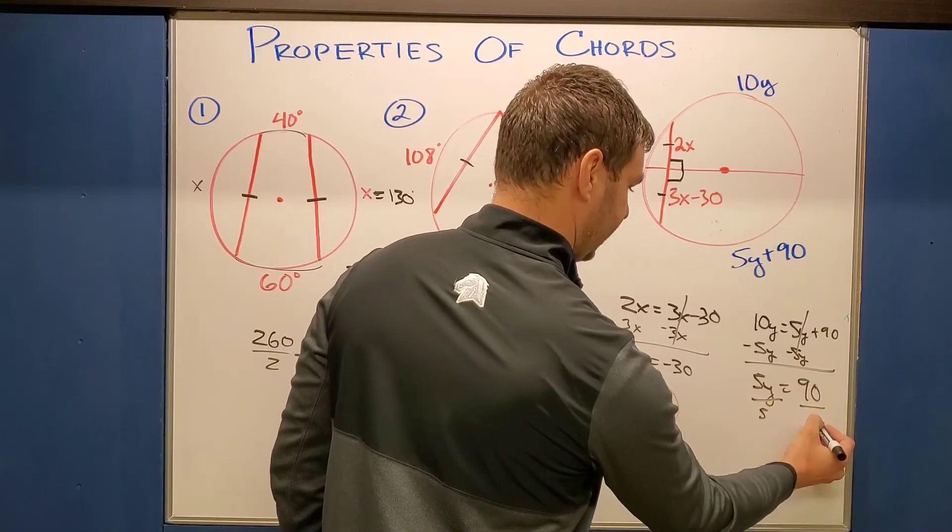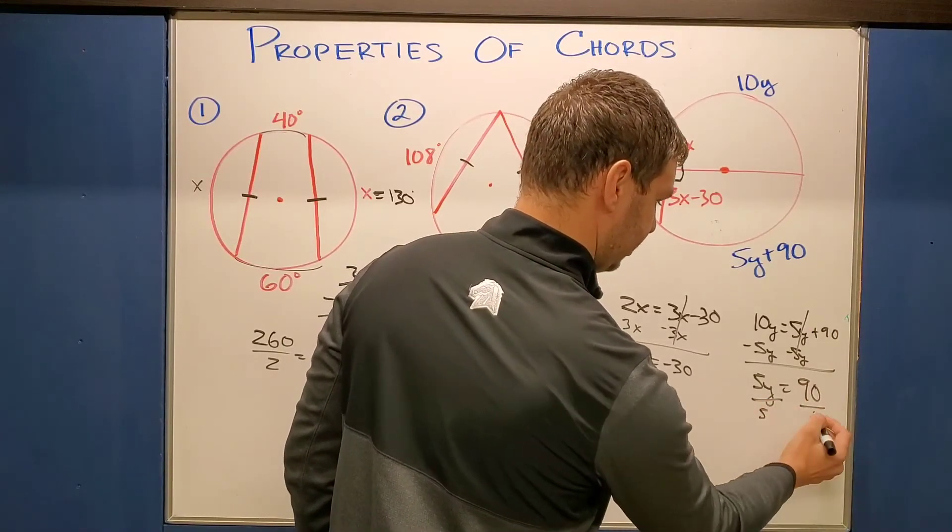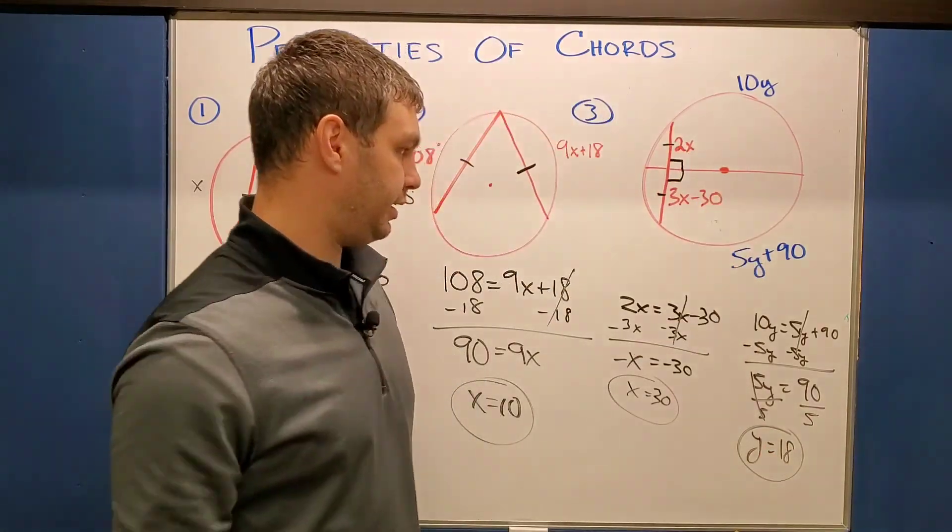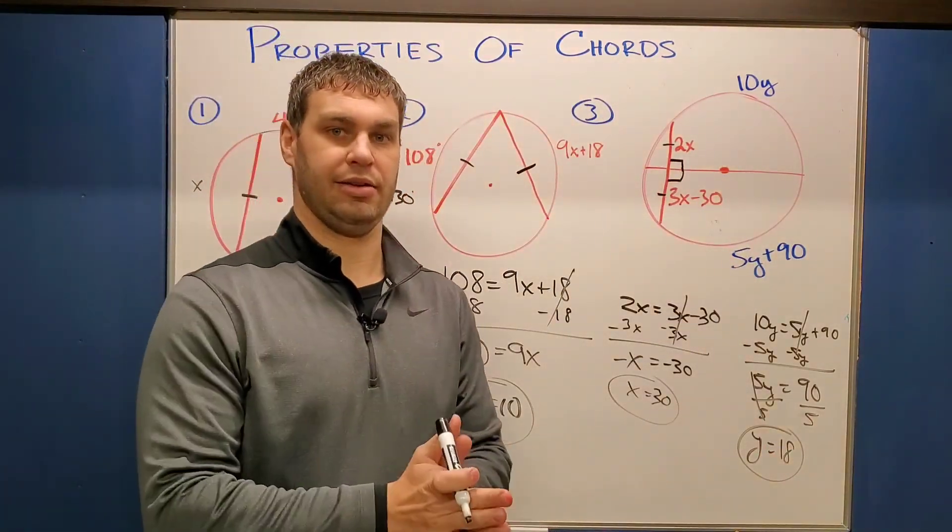Now, let's see, subtract 5Y on both sides. 10Y minus 5Y is 5Y equals 90. And divide by 5. 90 divided by 5 is 18. So Y here would have to be 18 in order to satisfy that circle.